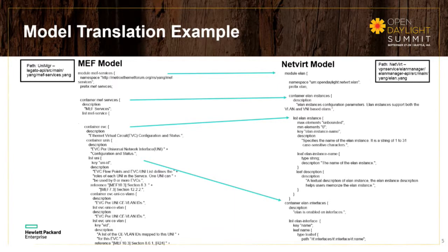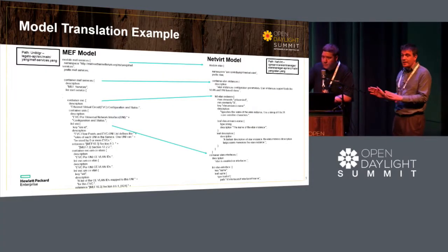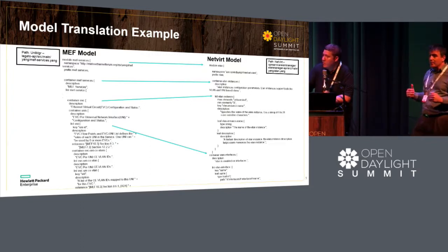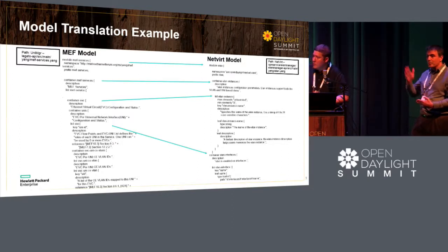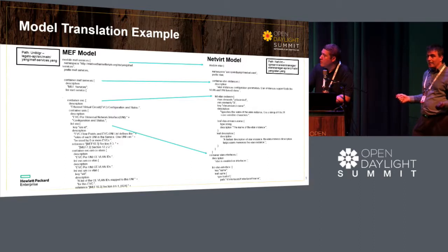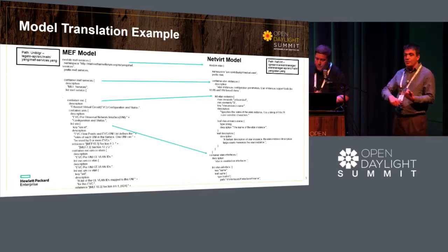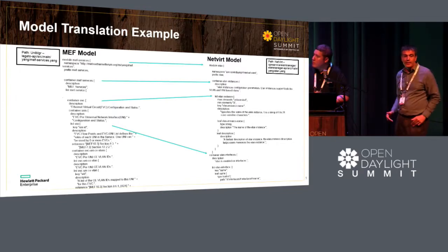It really shows that it's a simple, easy translation from MEF to NetVirt — not a lot of work. You can expose a single model behind the scenes to multiple northbound interfaces in parallel. The previous slides show that in parallel it's exposed to OpenStack, but also to a northbound application, and through federation you can connect them.